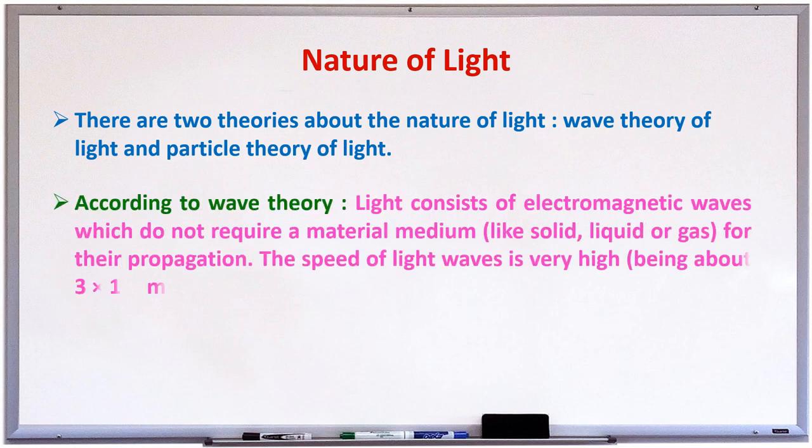According to wave theory, light consists of electromagnetic waves which do not require any material medium for their propagation. Which means, it will not need any solid medium or liquid medium or gaseous medium. But it can travel in vacuum also. The speed of light waves is very high. Which is, we all know it, 3 lakh kilometers per second, or 3 into 10 to the power of 8 meters per second.